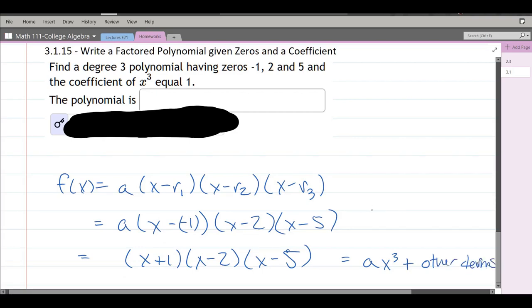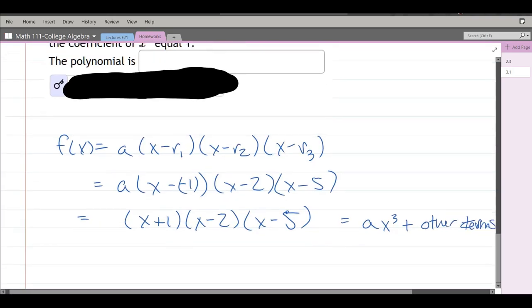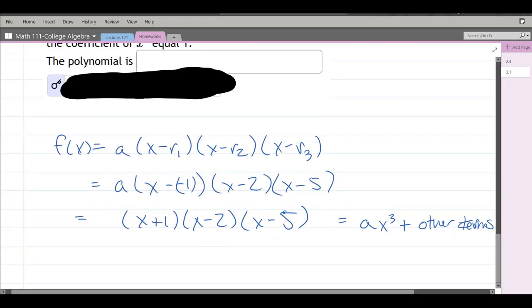Those would be degree 2, degree 1, and degree 0. But the point is our x cubed term will be ax cubed which they told us the coefficient of that has to be 1. We need a 1 x cubed so we get a 1 in the front.